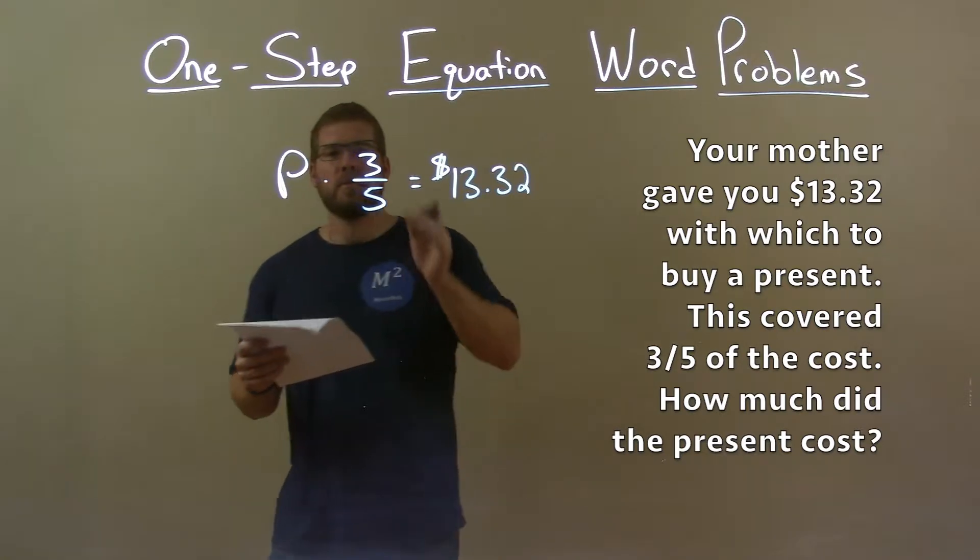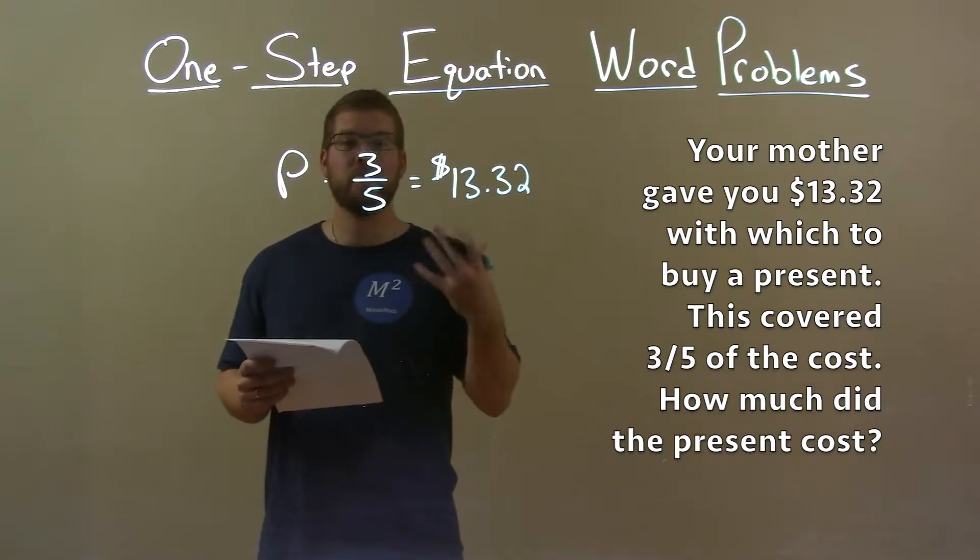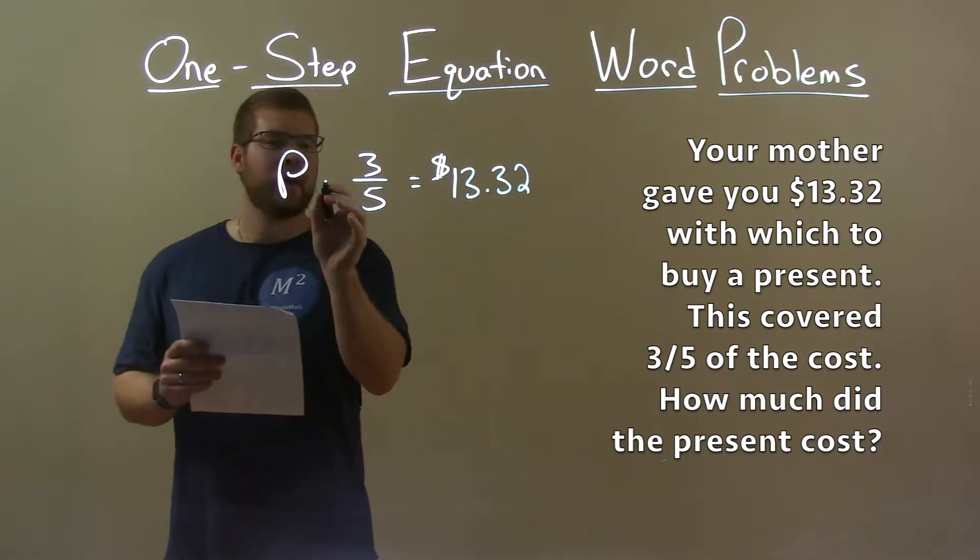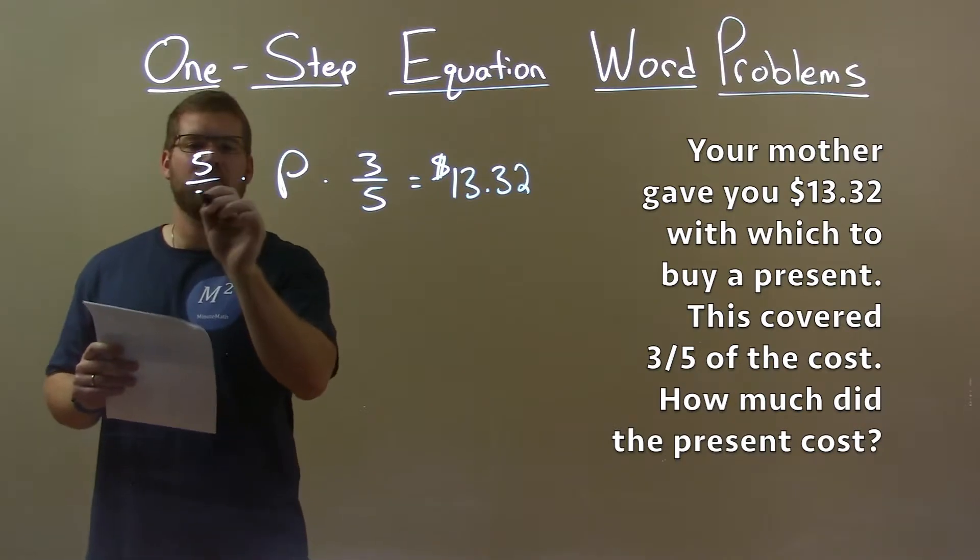With that information here, we have an equation we need to solve for P. We're multiplying by three-fifths when we get P by itself. If we multiply that by the reciprocal, five-thirds,